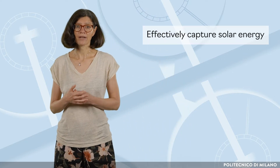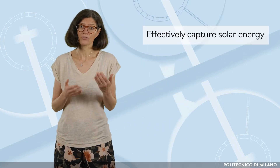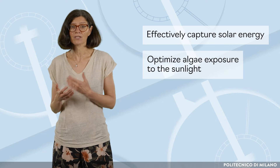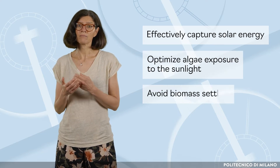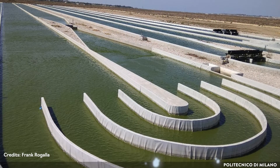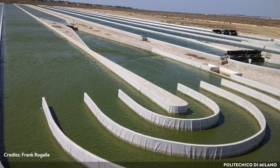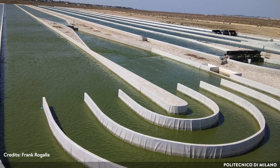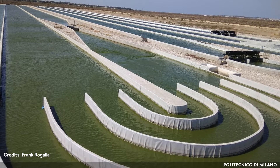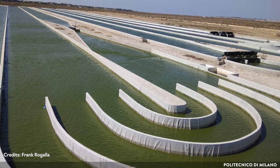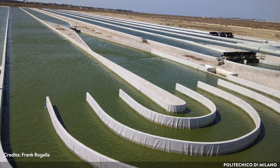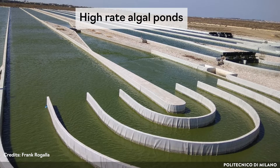From a technological point of view, algae-bacteria systems are designed to effectively capture solar energy and provide enough turbulence to optimize algae exposure to sunlight and avoid biomass settling. The typical technical solution consists of a shallow raceway pond with a water depth of 30 to 50 cm, equipped with a paddle wheel for mixing, also named high-rate algal ponds.